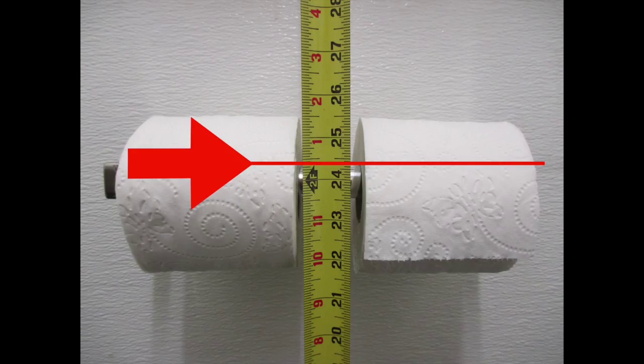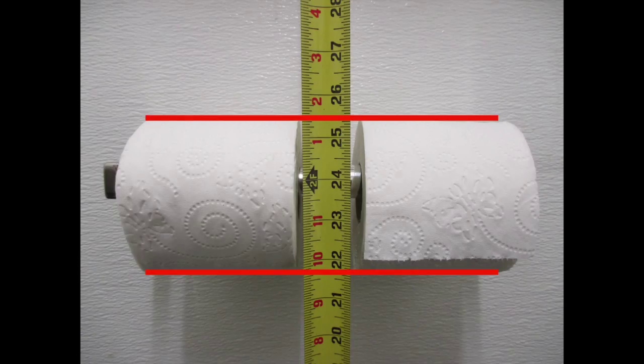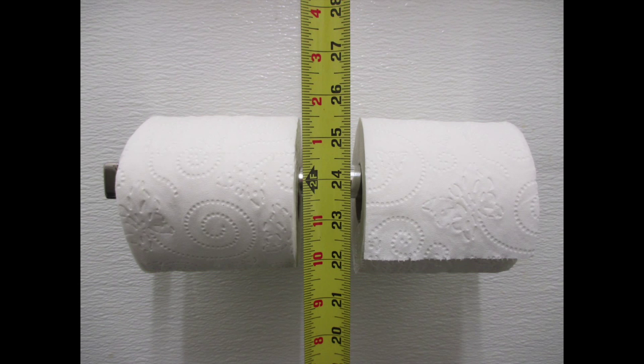The bottom of the roll and the top of the roll can also be considered in the height of an open-style dispenser, given that these would be the minimum and maximum heights one would have to reach in order to access the toilet paper.